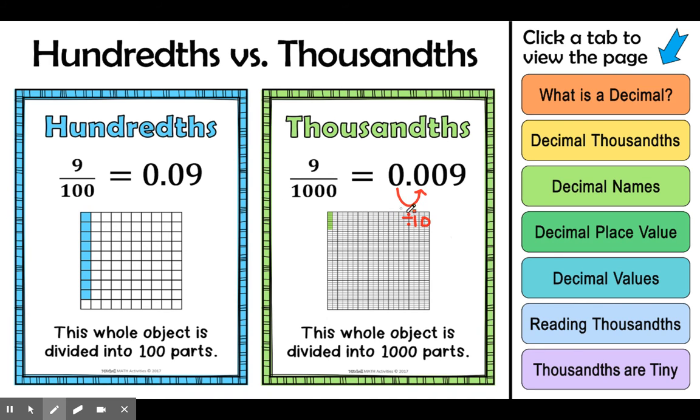So our one whole, when we divide that into 10 equal pieces, we get tenths. When we divide our tenths into 10 equal pieces, then we get hundredths. So that would look like this. Here's one-tenth. And when we cut it into 10 equal pieces, one-tenth of one-tenth is one-hundredth. It kind of gets to be like a tongue twister after a while. So we're dividing by 10.